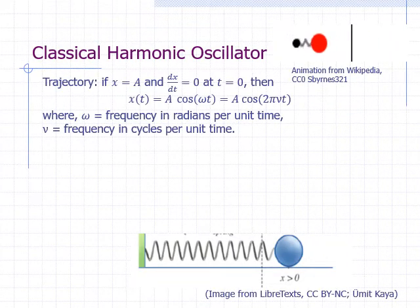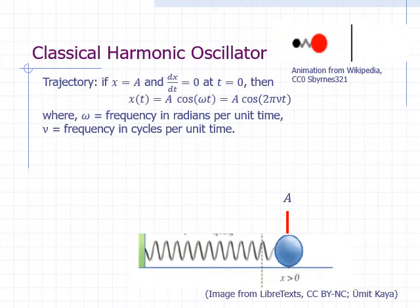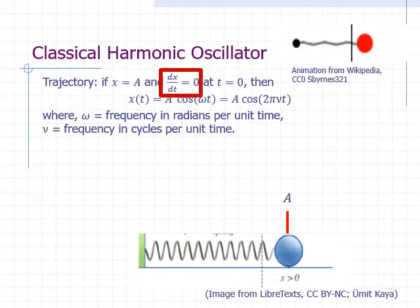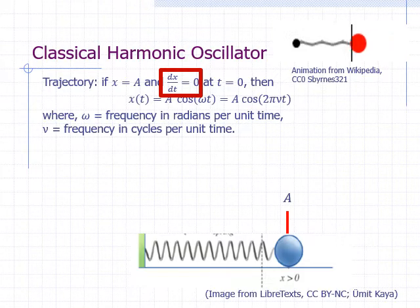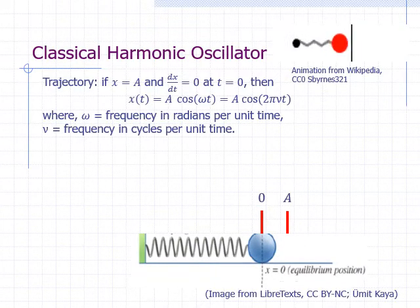Imagine that you are holding a harmonic oscillator at x equals a, that is to the right of the equilibrium position as shown in the figure. What happens when you let go? Let's take the time that you let go as time zero. This means at time zero, x is equal to a, and the velocity, which is the derivative of x with respect to time, is also zero. The particle will then move and speed up towards the left because it will be experiencing a pull towards the equilibrium position. It will keep speeding up until it reaches the equilibrium position, where the force on it becomes zero.